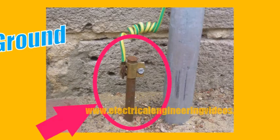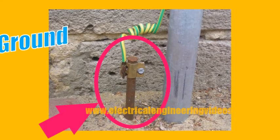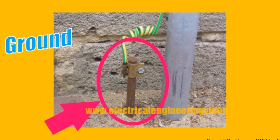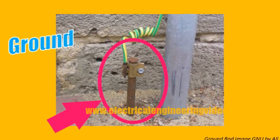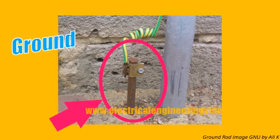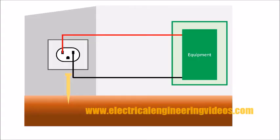The ground is a simple rod that is driven down into the earth and is connected to the appliance. The rod is driven down into the earth, and ground is then provided to the outlet by connecting the rod to the ground terminal of the outlet.